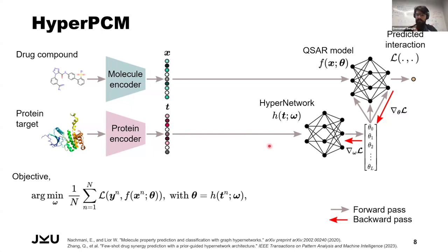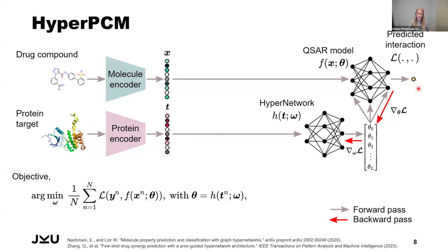There's a question asking to describe what the output is. The output can be basically whatever interaction you want to model — it can be binding affinity, binary classification of binding or non-binding interaction, bioactivity, or any other molecular properties like toxicity. The output is just a predicted continuous value or binary label, specifically for a given pair of drug compound and protein target.